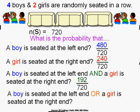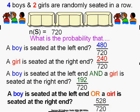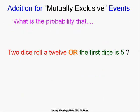Now for the OR, we apply the addition principle: P(A∪B) = P(A) + P(B) − P(A∩B) = 480/720 + 240/720 − 192/720. Any time you have an OR, use this addition principle. P(A) + P(B) − P(A∩B) equals your union.